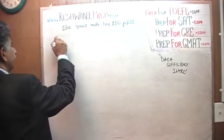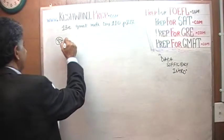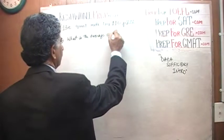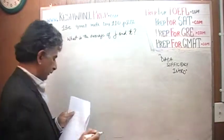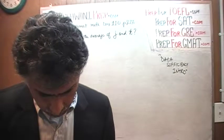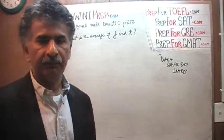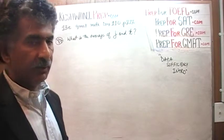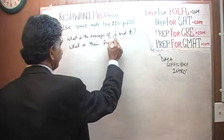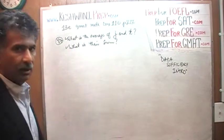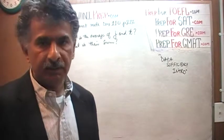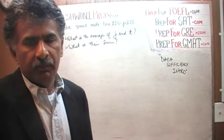In problem 87 they are asking: what is the average of j and k? We have to realize that this is the same as asking what is their sum, because if we know their sum we divide by two and have the average. So as long as we can figure out what j plus k is, that's all we need.